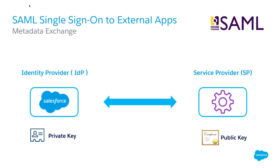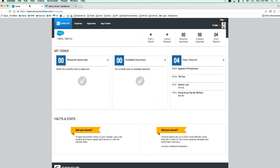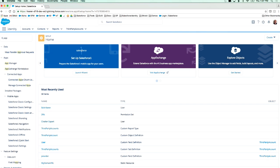Trust between service providers and IDP is established offline by exchanging some metadata information. For example, the IDP uses a private encryption key to sign the message, and also generates a public key or certificate and shares it with the service provider so the service provider can verify the signature on the message. Essentially, the IDP and the SP exchange information — the IDP says here's where identity will be provided from, and the SP says here's who I trust to give me identity. That's done offline during the registration process — you do it once for every service provider.